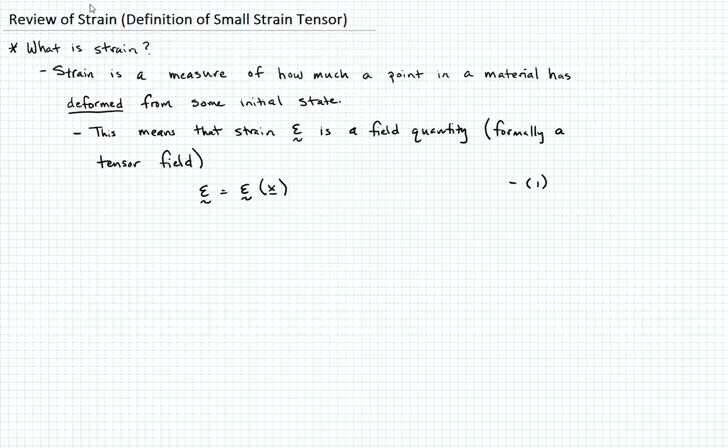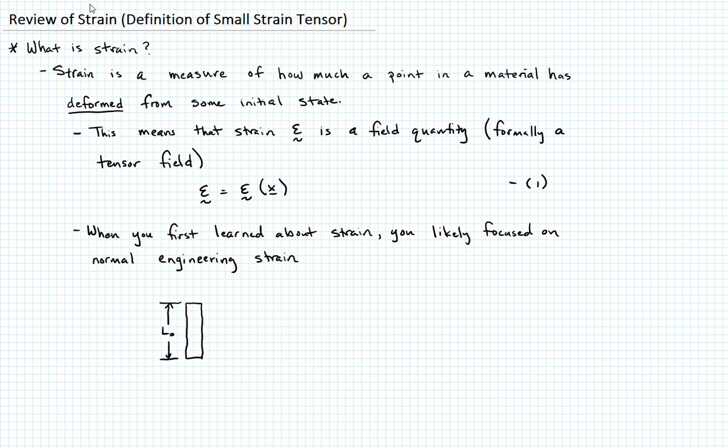So when you first learned about strain, you likely focused on normal engineering strain. So what that probably looked like is you had some bar. Let's draw a bar here. And that bar had some initial length, L0. And then under some axial load, it stretched and has some new length. Now we'll call it L. And you probably defined that strain as epsilon. You didn't write it as a tensor because you're only really in one dimension. You said that was L minus L0 divided by L0. It's the change in length divided by the length or the oft-quoted delta L over L. Call that equation 2. Nothing wrong with this definition. This is the normal engineering strain.